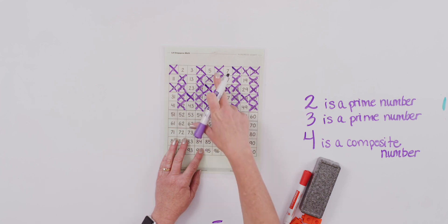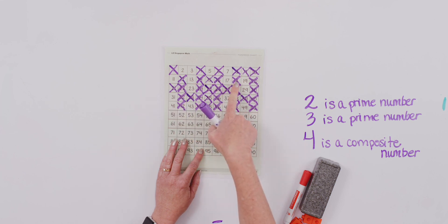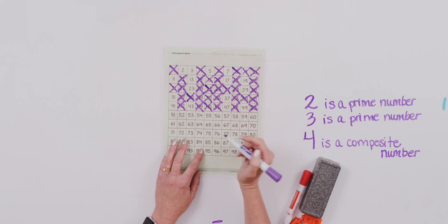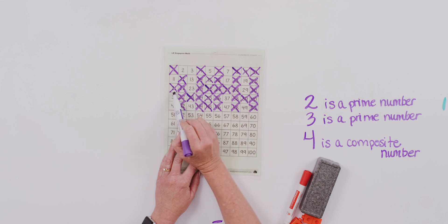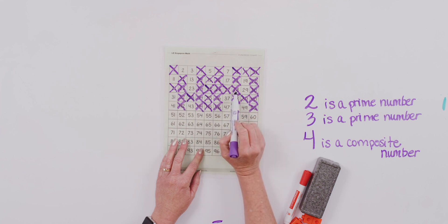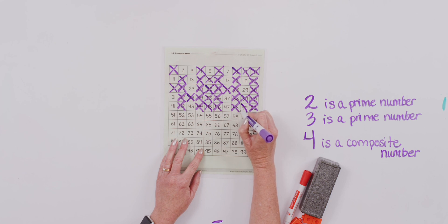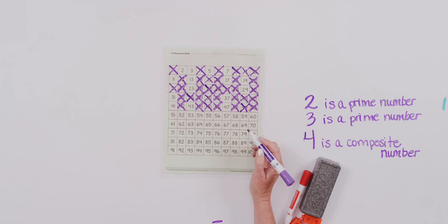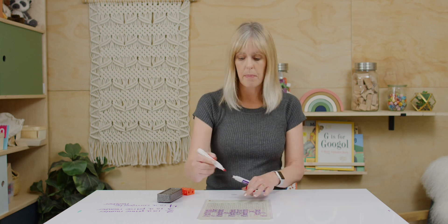How about our 6s? You probably already noticed, we've already crossed off 6, 12, 18. So we don't have to do any more work there. How about our 7s? 7, 14, 21, 28, 35, 42, only 1. 49. So what we did, we found all of our prime numbers up to the number 50.